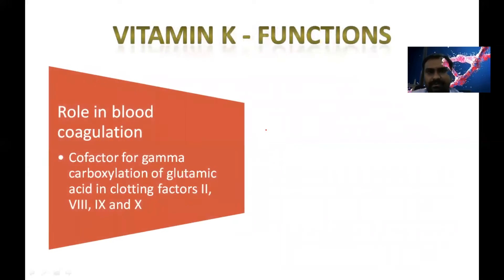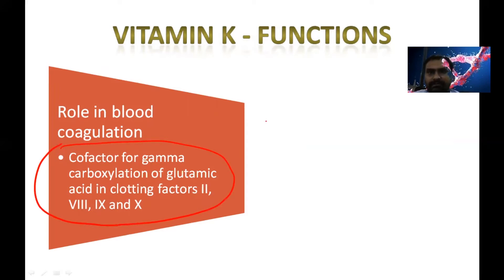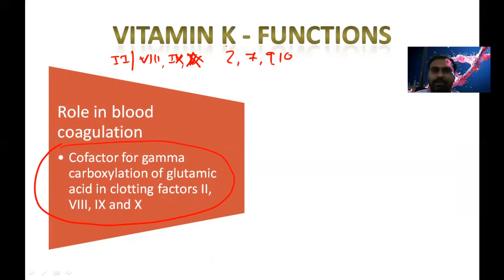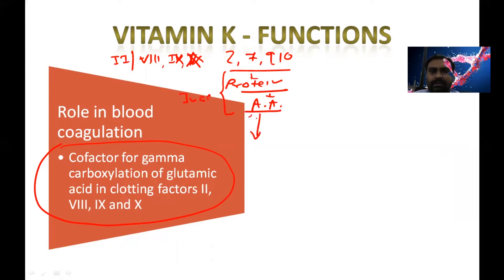Now, what are the functions of vitamin K? It is a cofactor for gamma carboxylation of glutamic acid in clotting factors — specifically clotting factors 2, 7, 9, and 10. These are protein factors. They are produced as an inactive form, and with the help of vitamin K, there is gamma carboxylation of the glutamic acid residue. These factors are proteins made up of amino acids. When gamma carboxylation occurs at the glutamic acid, it becomes an active factor that helps in the clotting mechanism.